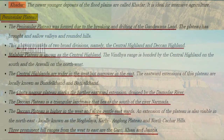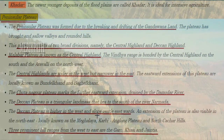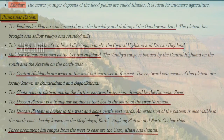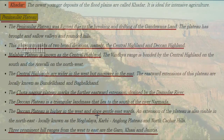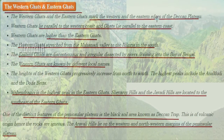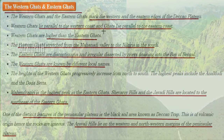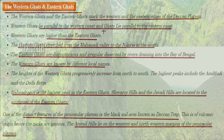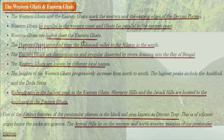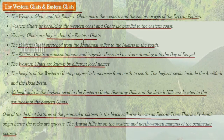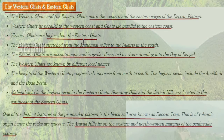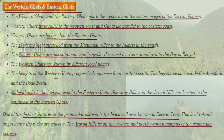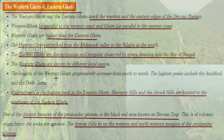The Deccan Plateau is a triangular landmass lying to the south of river Narmada, higher in the west and sloping gently towards the east. An extension of the plateau is also visible in the north-east, locally known as Meghalaya. The Western Ghats and Eastern Ghats mark the western and eastern edges of the Deccan Plateau respectively. Western Ghats lie parallel to the western coast and are higher than the Eastern Ghats, which lie parallel to the eastern coast. The Eastern Ghats stretch from the Mahanadi valley to the Nilgiris in the south, and are discontinuous and irregularly dissected by rivers draining into the Bay of Bengal.